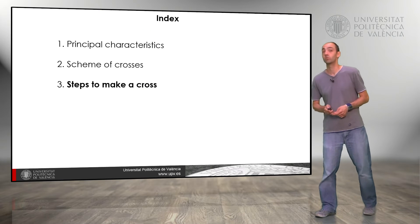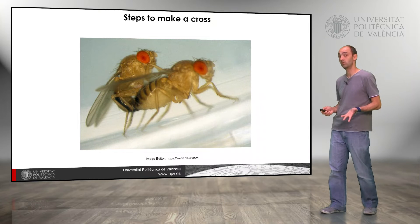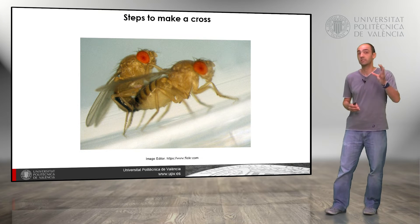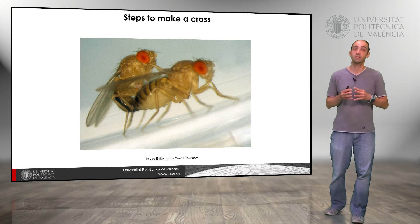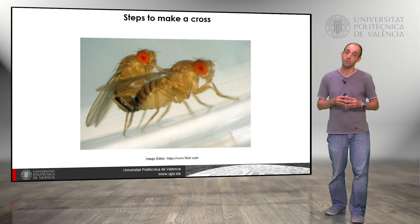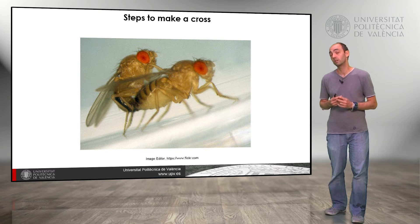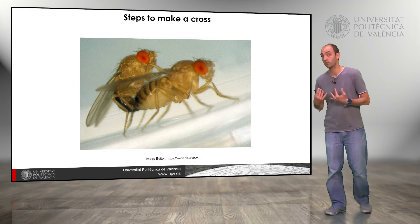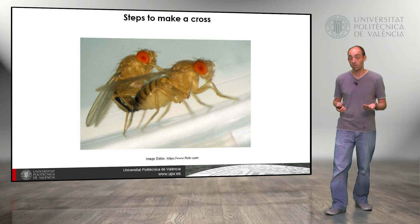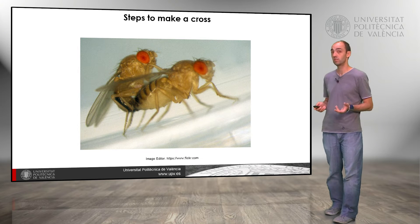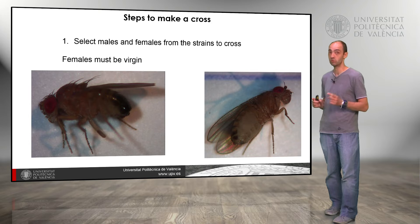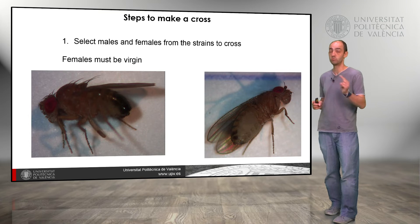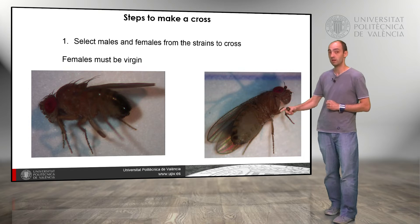Which are the steps that we have to follow to make a cross? We want to be sure that a given male is fecundating a given female, and that the eggs that female produces are from that male and not from another male, because we have to take into account that the female can store sperm from different males. So the key requirement here is that we have to use virgin females — females must be virgin.